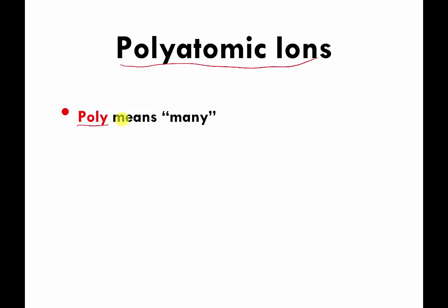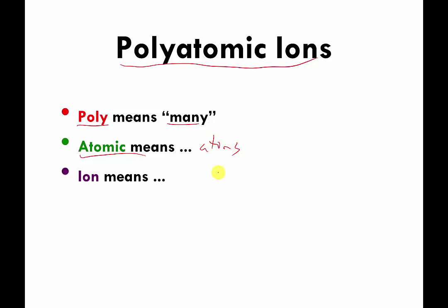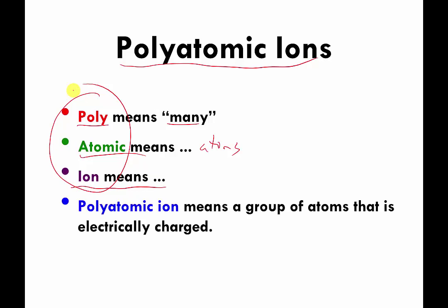The prefix 'poly' means many. 'Atomic' means related to atoms. And 'ion' — you should probably know what that means — that's an atom or a group of atoms that has an electrical charge. So polyatomic ion just means a group of atoms that has an electrical charge.